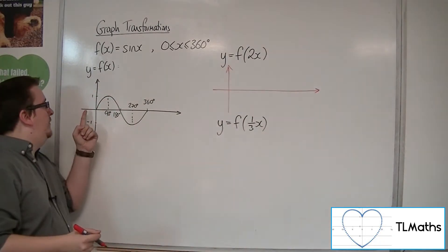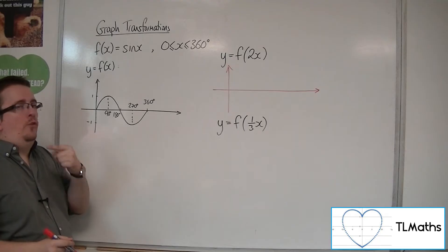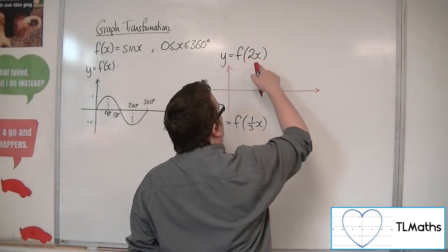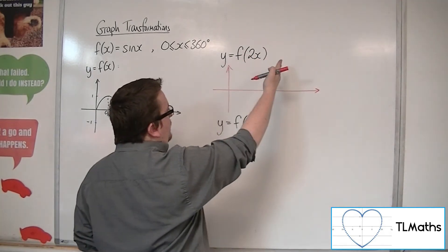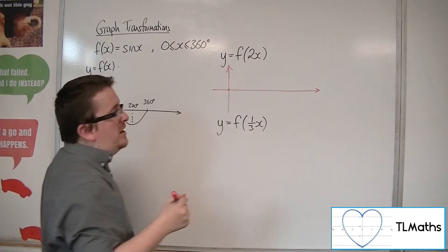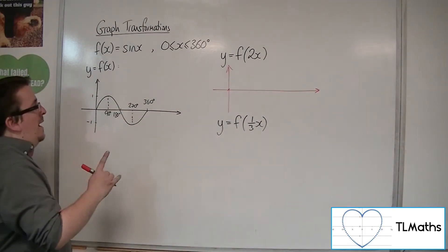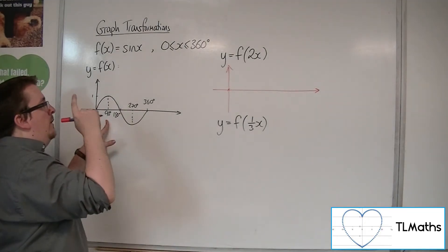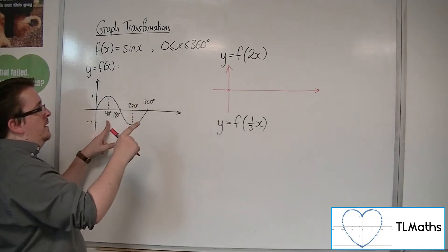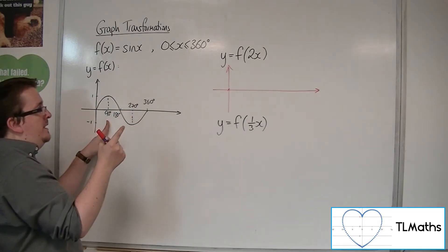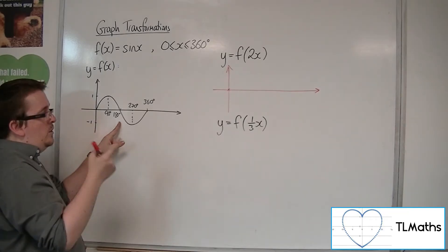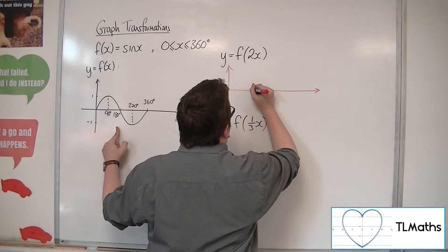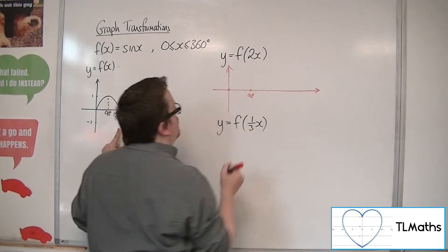When x is 0, f of 0 is 0, because it goes through (0, 0). So if x is 0 here, 2 lots of 0 is 0, so we just get f of 0 again — it still goes through (0, 0). Now when x is 90, we have f of 2 lots of 90, so f of 180. f of 180 we know is 0. So when x is 90 degrees, we know we're at 0.